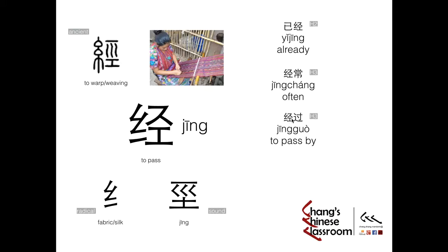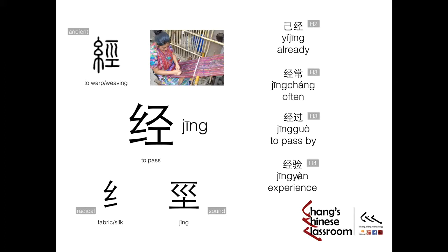Next: Jing Guo. Both Jing and Guo mean to pass by, so combined still means to pass by. And last: Jing Yan. Jing means to pass and in the past, and Yan means to examine. So it's like your past actions that have been examined — that becomes your experience. So Jing Yan combined means experience.